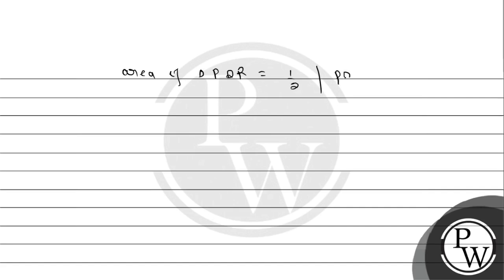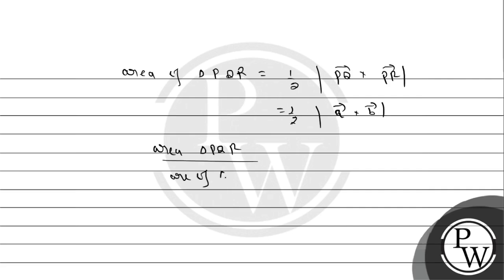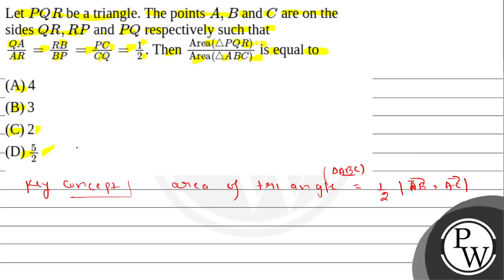Area of triangle PQR = 1/2 × |vector PQ × vector PR| = 1/2 × |vector_a × vector_b|. Now the ratio: area of triangle PQR / area of triangle ABC = (1/2 |vector_a × vector_b|) / (1/6 |vector_a × vector_b|). The cross product terms cancel, giving 6/2 = 3. So the answer is 3. Hope you enjoy — thank you!